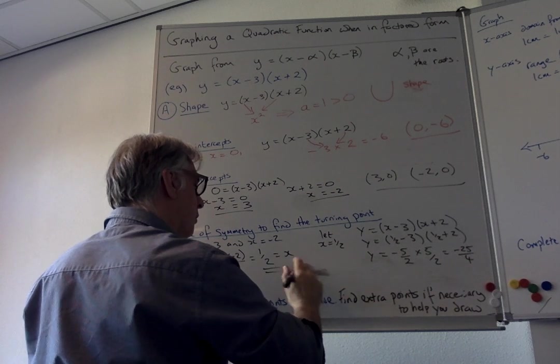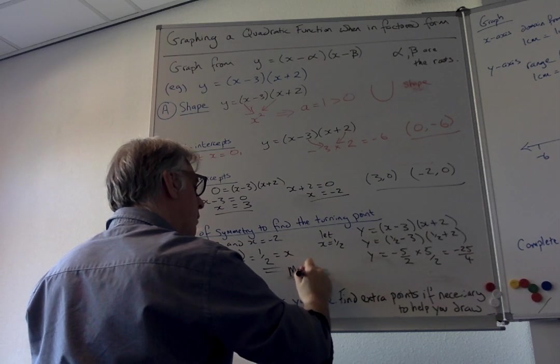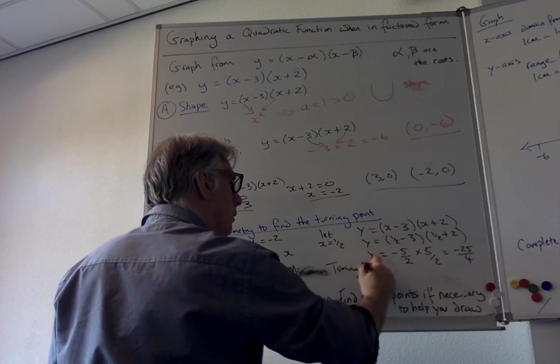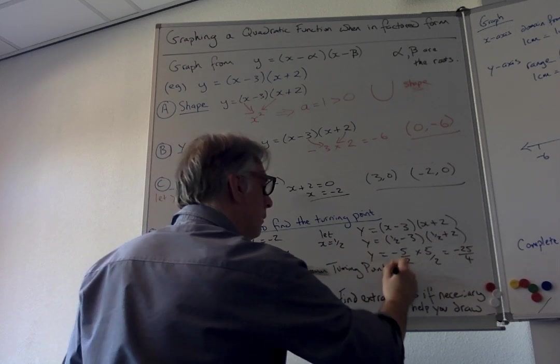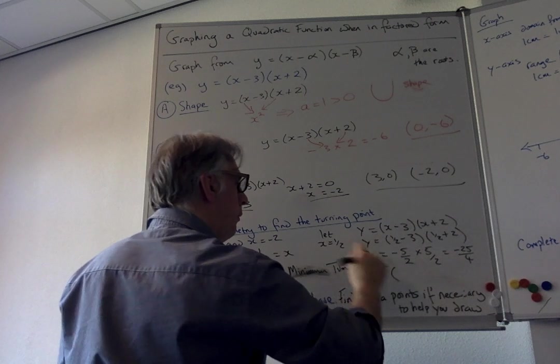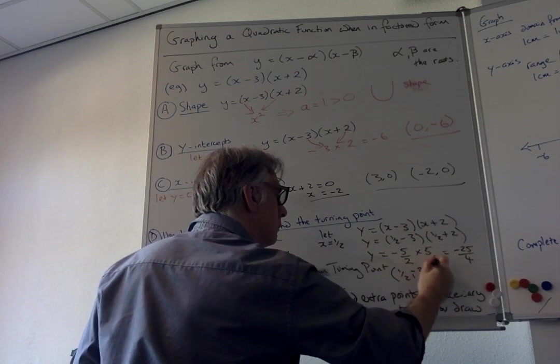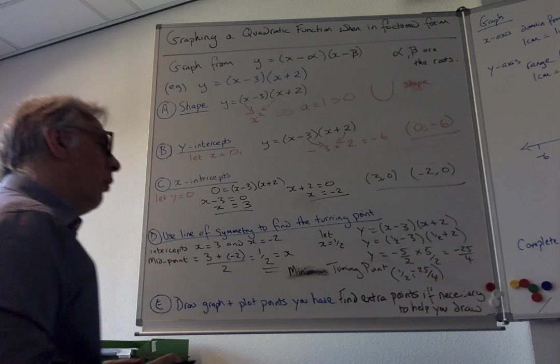The minimum turning point is at a half for x and minus 25 over 4 for y, and we can put that on our graph.